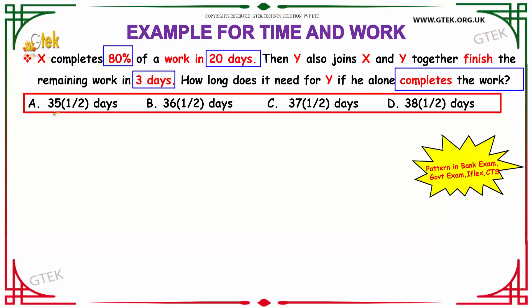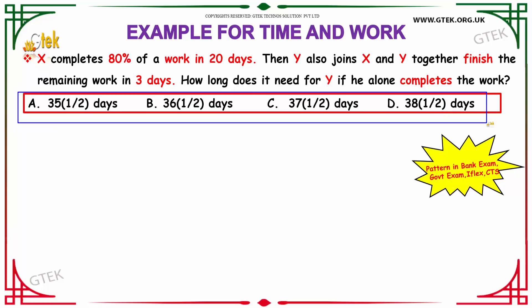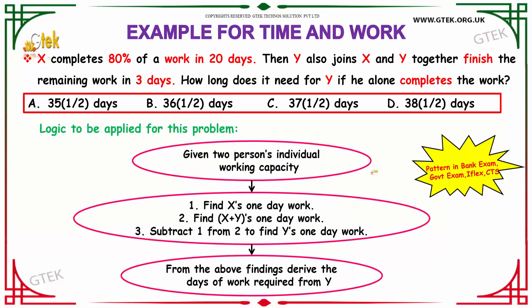So, we have to find that how much time Y needs to complete the work all alone. Our options are given over here. Let us see the logic behind solving this question. We are given with 2 persons individual working capacity.